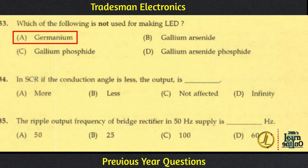In an SCR, if the conduction angle is less, the output is less.